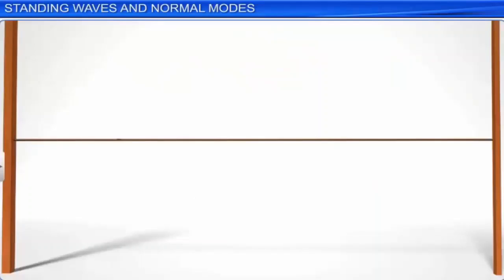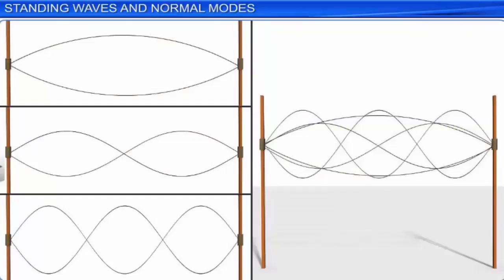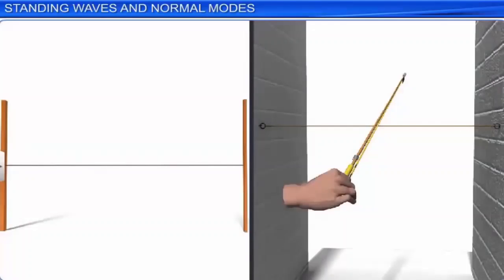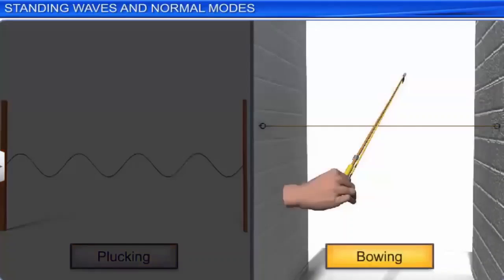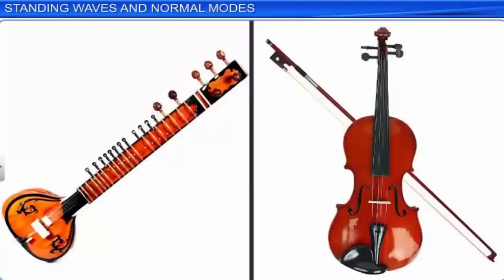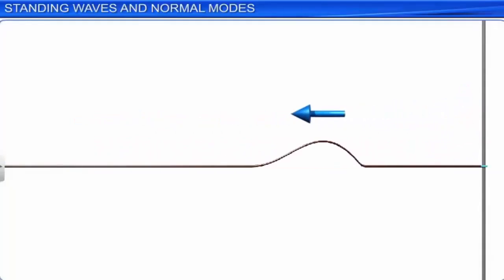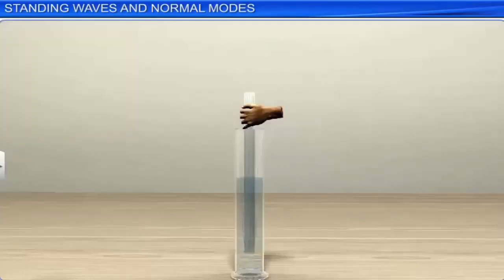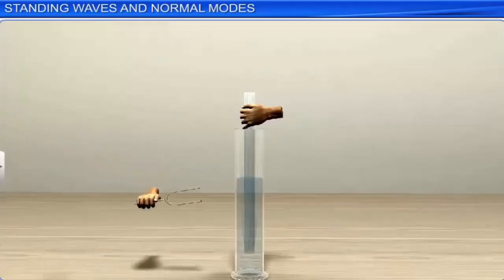A stretched string fixed at both ends can vibrate simultaneously in more than one mode. The mode that is strongly excited depends on where the string is plucked or bowed. Musical instruments like the sitar, violin, etc. use this principle to produce music. Let us now study the modes of vibration of a system which is closed at one end and free at the other. The air column in a glass tube partially filled with water is an example of such a system. Vibrations are produced at the open end of the tube with a tuning fork, which travel through the air column to the water surface and get reflected.